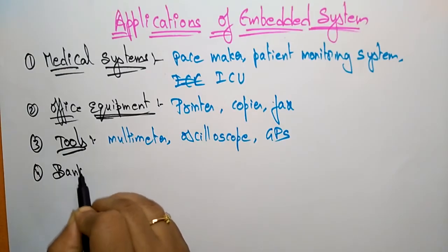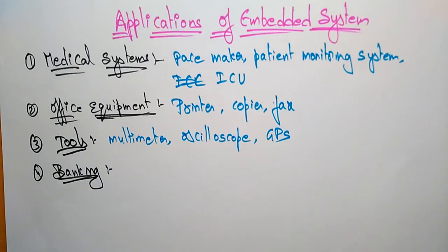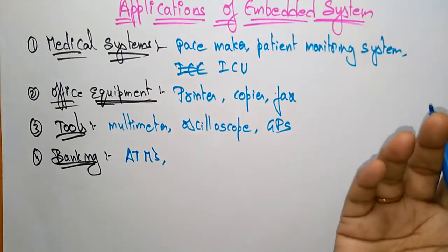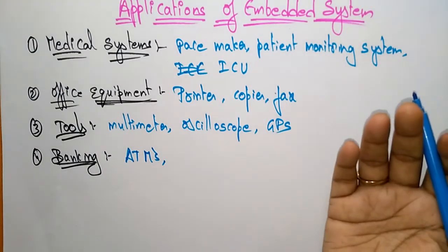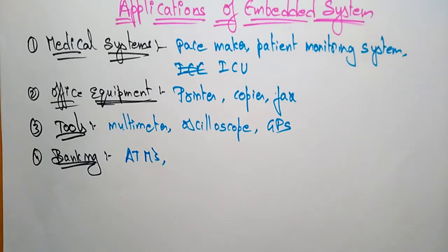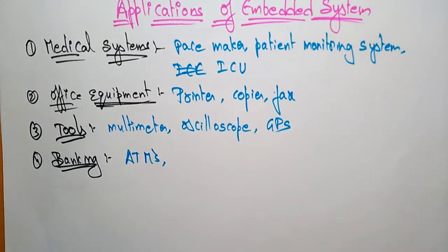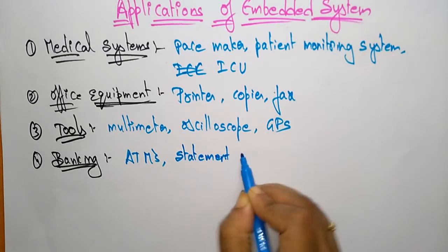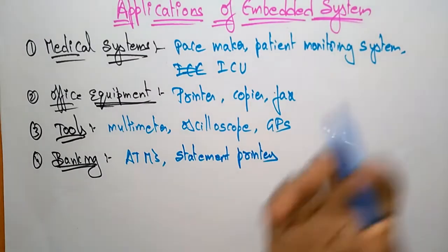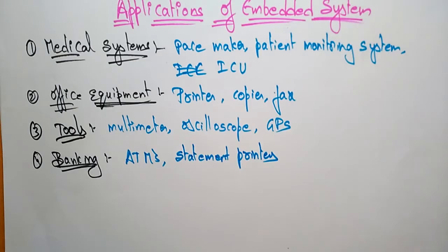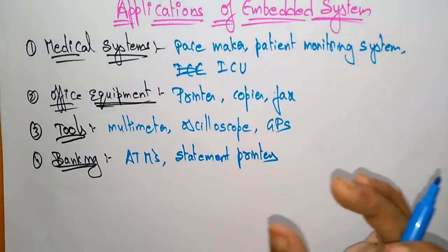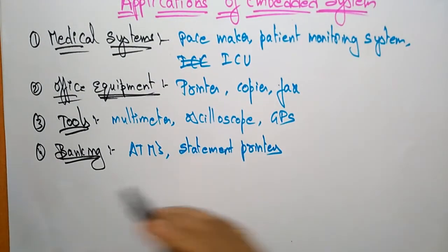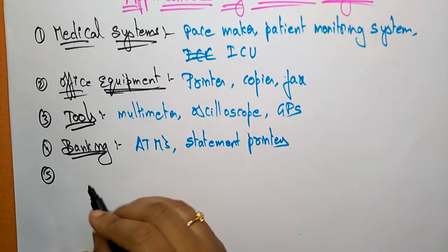In banking, ATM machines use an embedded system — the system performs particular tasks such as depositing money as well as withdrawing money. Statement printers also use an embedded system: whenever you withdraw money, a printout is produced. So both ATM machines and statement printers are designed with embedded systems.